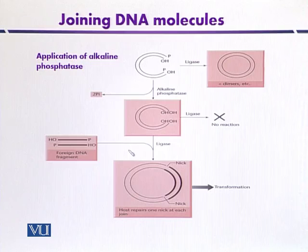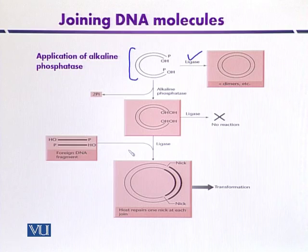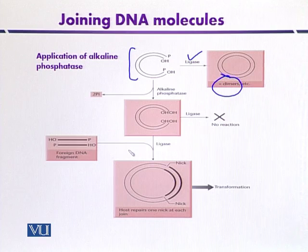We can understand this with the help of a diagram showing the application of alkaline phosphatase to create recombinant molecules. Here we have a plasmid that is digested with a restriction enzyme like EcoRI, so that sticky ends are created. At this stage, there is a possibility that it can self-ligate or ligate with neighboring vector molecules. In the presence of ligase, dimer formation occurs — meaning two digested plasmid molecules can ligate together — without insertion of the foreign DNA.